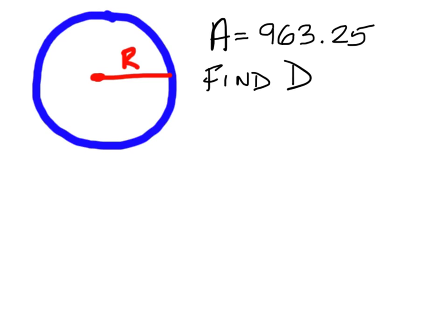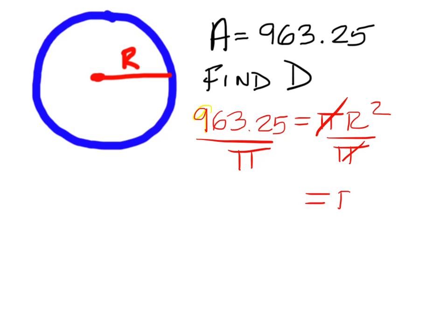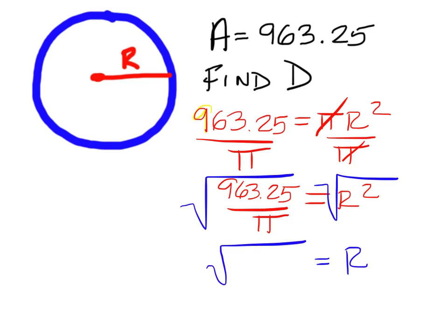On this problem, you're given the area, so you need 963.25 equals pi r squared, and divide both sides by pi so that the pi's will cancel out on the right, and you're left with 963.25 over pi on the left. But now you need the square root of both sides. So let's leave that square root of 963.25 over pi the way it is now.